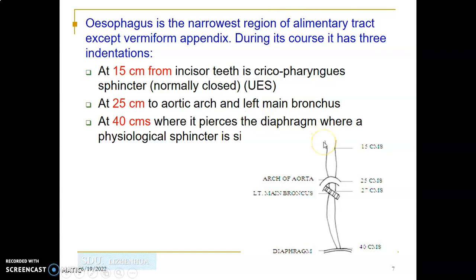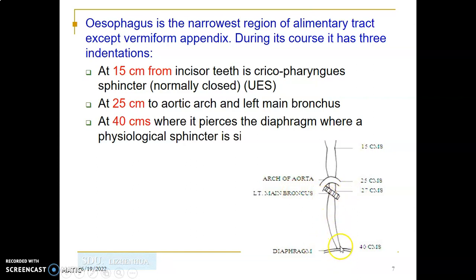During endoscopy, the constrictions can be measured from the upper incisor teeth. At 15 centimeters from the upper incisors is the cricopharyngeal sphincter (first constriction). At 25 centimeters is where the arch of the aorta crosses anteriorly (second constriction). At 27 centimeters is the left main bronchus (third constriction). The esophageal hiatus of the diaphragm is at 40 centimeters from the upper incisors.